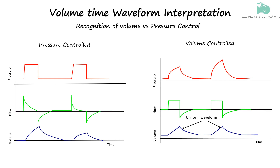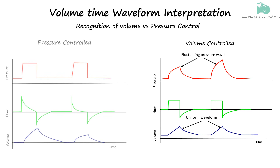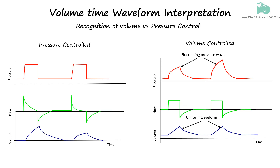This is because in volume-controlled ventilation, the ventilator maintains a constant volume, leading to a uniform waveform. Additionally, while the volume-time waveform remains consistent, the pressure-time waveform may vary depending on the patient's lung compliance and airway resistance. In contrast, in pressure-controlled ventilation, the volume-time waveform may change with varying lung conditions, but the pressure-time waveform remains consistent, indicating that pressure is the controlled variable.